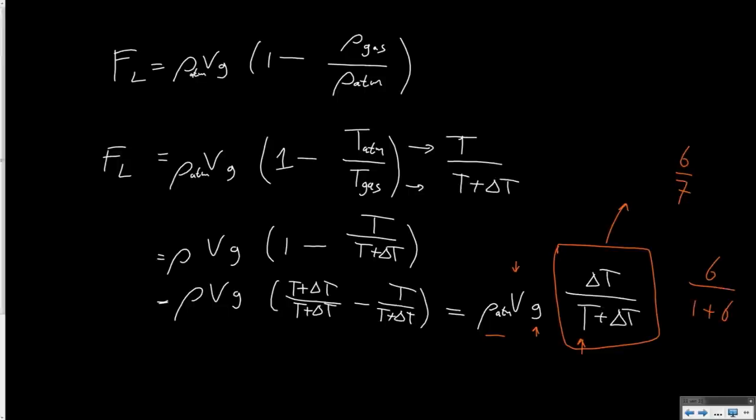If we want to generate the same amount of lift as with a helium balloon, this should be 6/7. This means it would be something like 6 divided by (1 plus 6), because that's 6/7. In other words, delta T would have to be 6 times the temperature. This is Kelvin, so if the temperature is around 20 degrees, we're close to 300 Kelvin. That means an increase of 1800 degrees Kelvin, which would result in a temperature equal to a blowtorch. This shows you wouldn't do this; you'd burn your balloon. The lift of hot air is generally much smaller than the lift of helium.